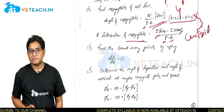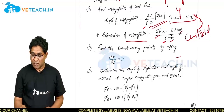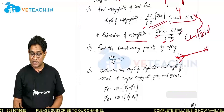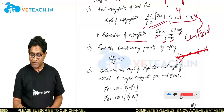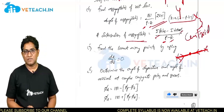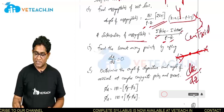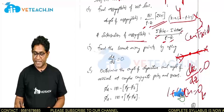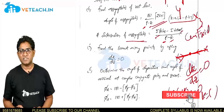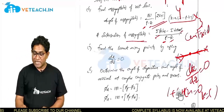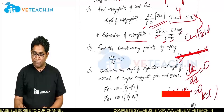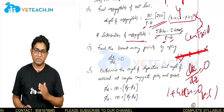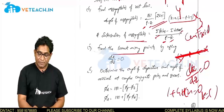Next, find the breakaway points — where the root locus breaks away. Suppose two poles exist on the real axis; the root locus starts from each and breaks away at some point. To find that point, use the relation dk/dz = 0. From the characteristic equation 1 + GH(z) = 0, write k as a function of z, then set dk/dz = 0 and solve to get the breakaway points.